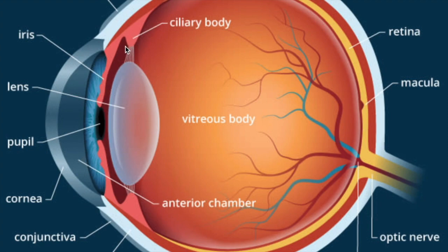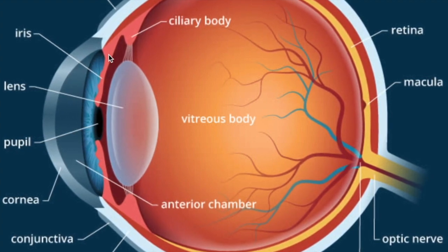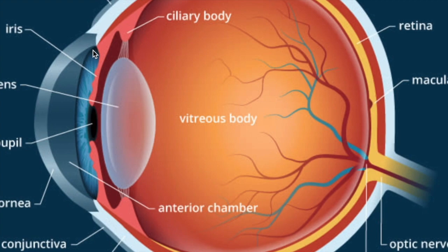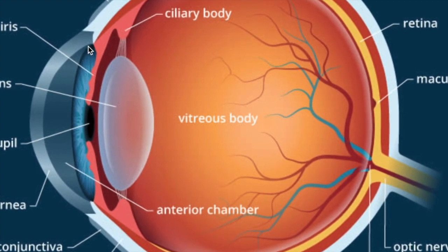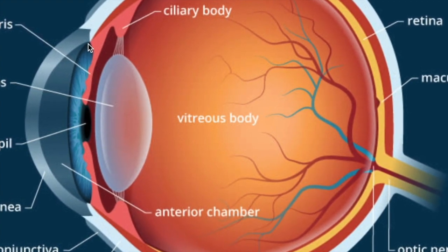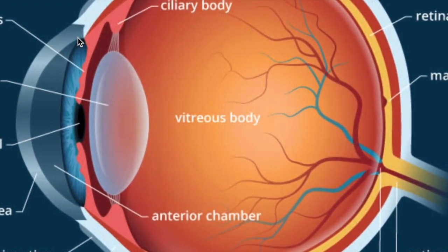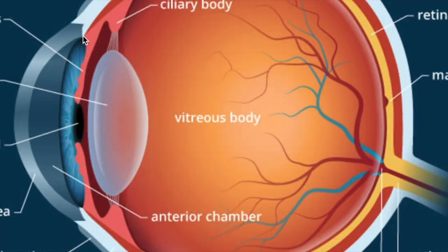The aqueous humor is produced in the ciliary body and travels anteriorly, draining at the angle. This angle is important because it will come up later as one of the complications of diabetic retinopathy.